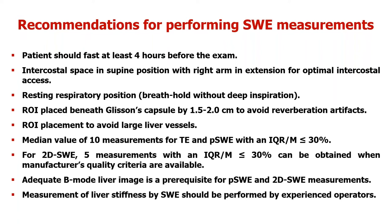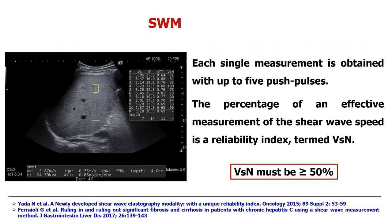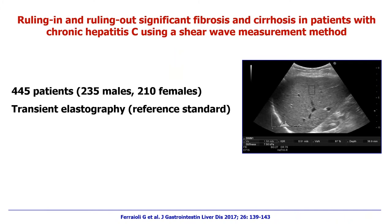It is important to have the availability of manufacturers' quality criteria. The quality of the B-mode image is very important; the liver capsule should be seen on the screen as a clear white line. Measurement of liver stiffness should be performed by experienced operators. Each single measurement is made with up to five push-pulses, and for the shear-wave measurement, the reliability index is the VSN, which must be higher than or equal to 50 percent.